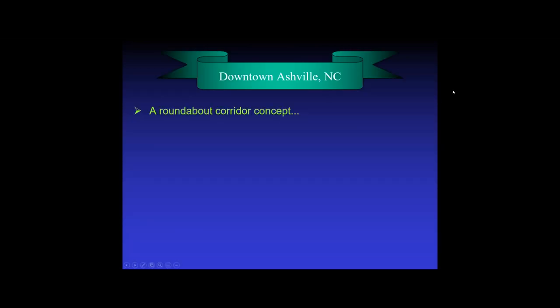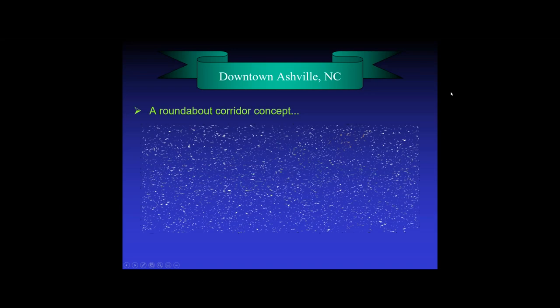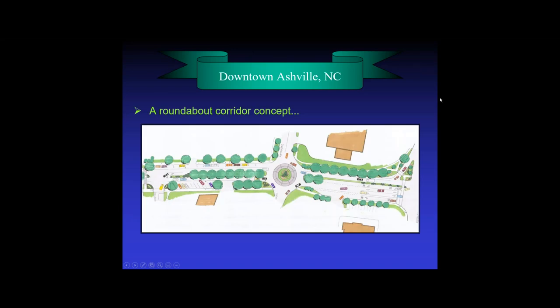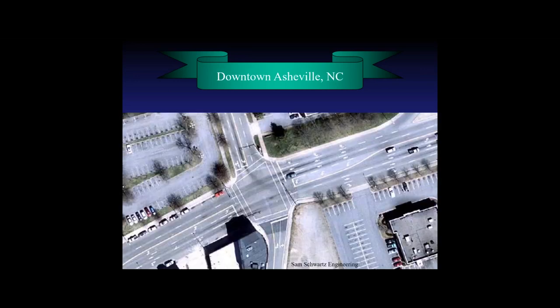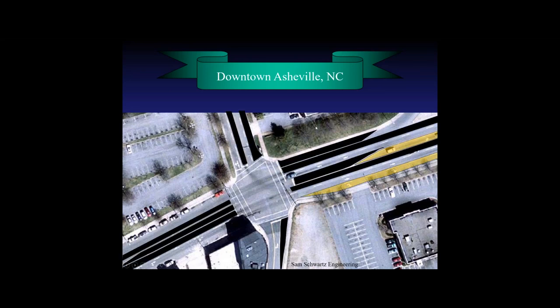I hope you go to Asheville next summer and visit this intersection and watch it operate. Somebody came up with a concept: if you put in a modern roundabout, you could have landscape medians — which the business community wanted — and you could have angled parking, more parking, which the business community has to have for economic vitality. Do we need all those through lanes? Do we need all those turn lanes? Maybe not.